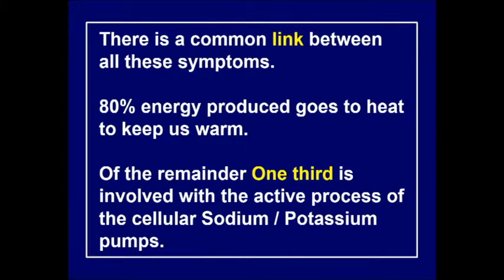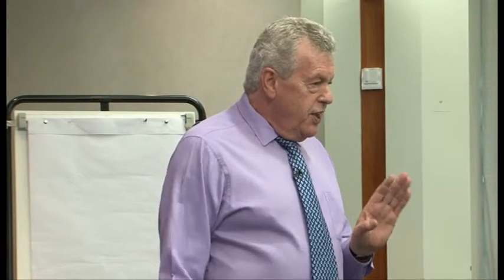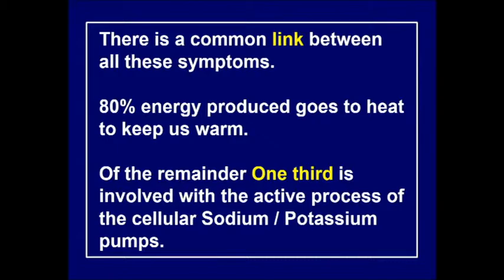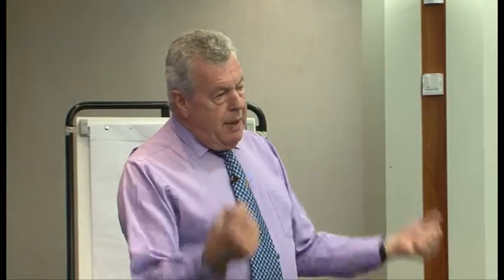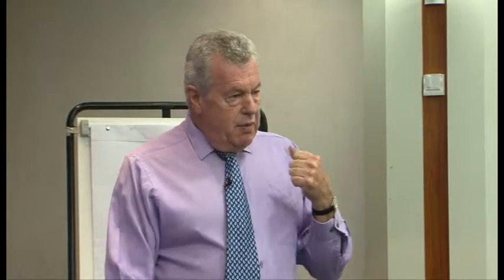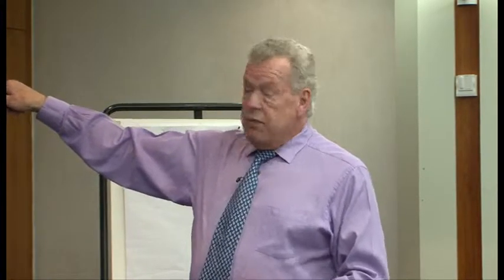Something important to emphasize: 80% of the energy we produce in our body — whether 2,000 or 3,000 calories — goes to keeping us warm. That's a lot. We're left with only 20%, and of that 20%, only one-third is involved with muscle contractions. Most of the rest is involved with regulating sodium and potassium pumps — actively pumping sodium out when it enters the cell and putting potassium back in using ATP.